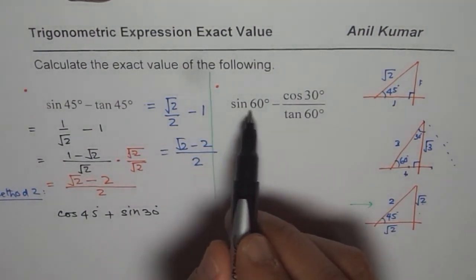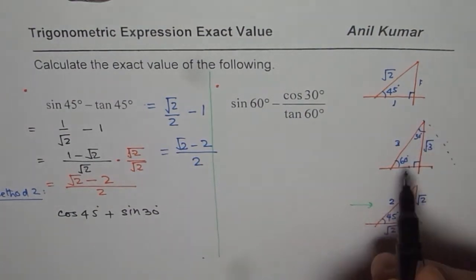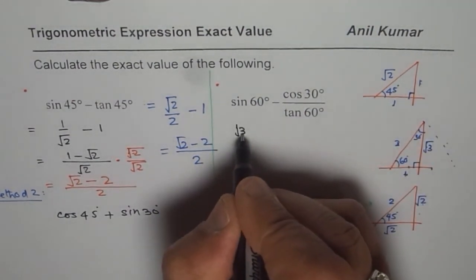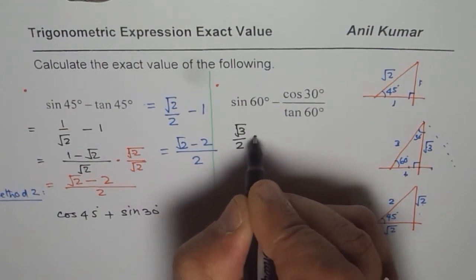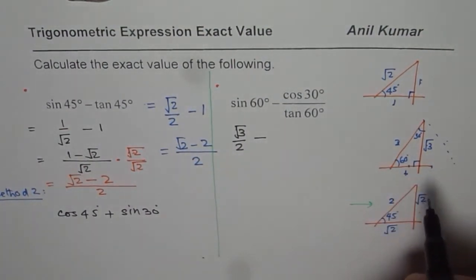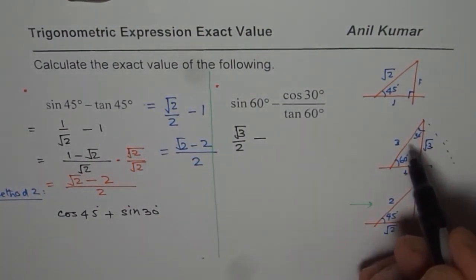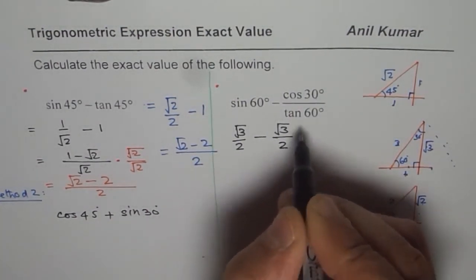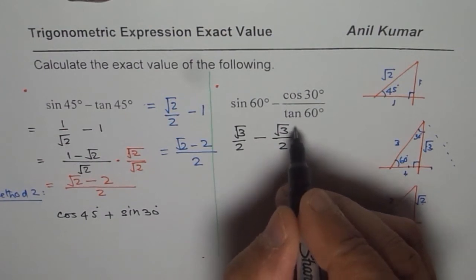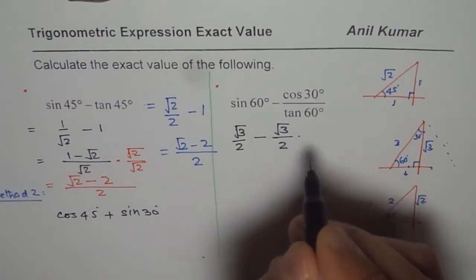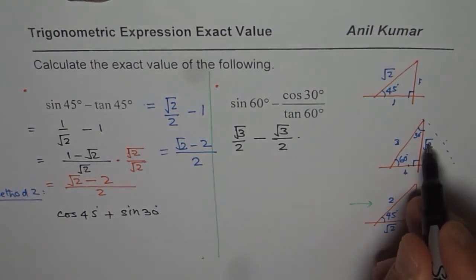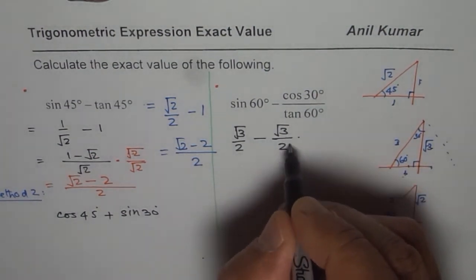We have sine of 60 degrees. Sine of 60 degrees is opposite over hypotenuse. That gives us square root 3 over 2 minus cosine of 30 degrees. 30 degrees adjacent side over hypotenuse square root 3 over 2. Tan of 60 degrees. That means I have to divide by tan, right? So let me write tan of 60 degrees. 60 is square root 3 over 1. So it is in the denominator.